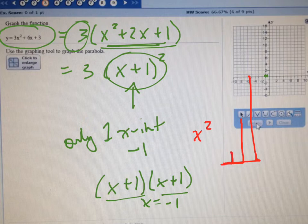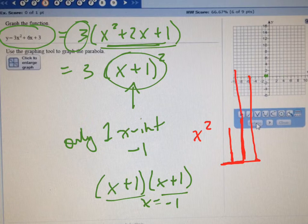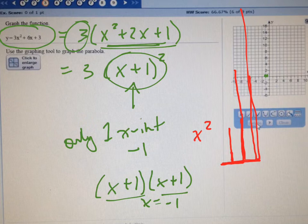So instead of going over 1 up 1, you're going over 1 up 3. Instead of going over 2 up 4, multiply 4 by 3 and you get 12. You're going up 3 times as much. In other words, it's going to go up even faster.